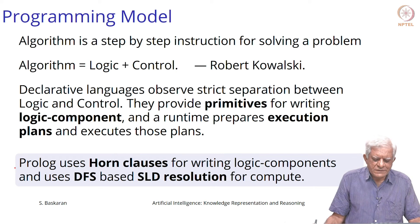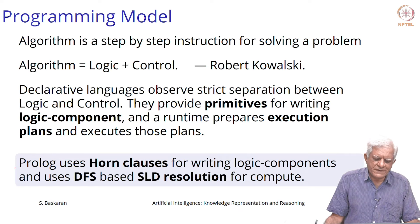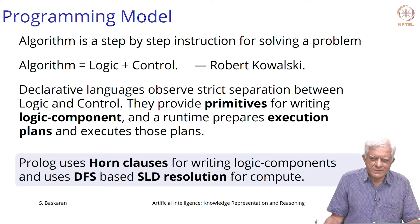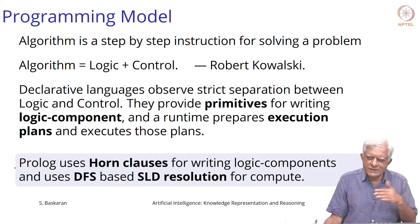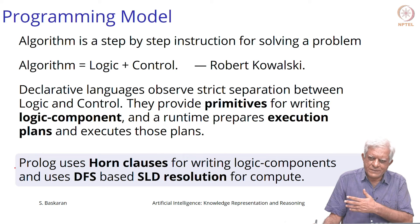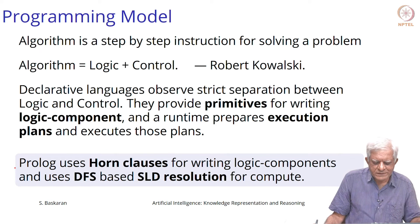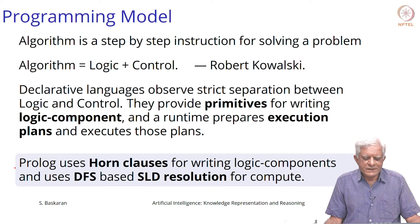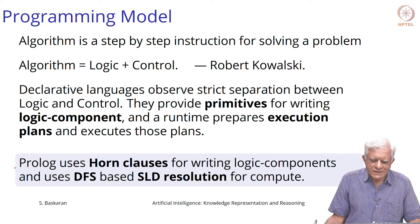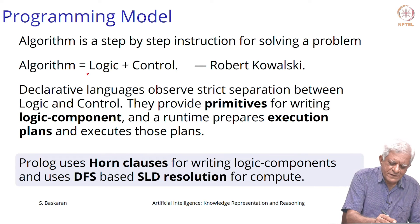The programming model is: program equals logic plus control. Our traditional notion of an algorithm is a step-by-step instruction for solving a problem — closer to imperative programming, as in C, where you write statements one by one and control flow is part of the code. In logic programming, which is a declarative style, we want to separate the logic from the control.